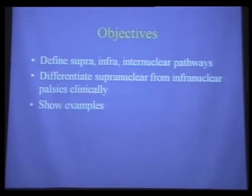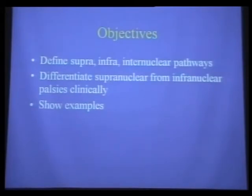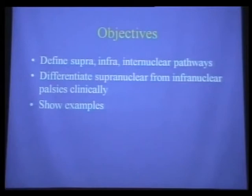That's what my residents do—when they come out of training, they always want to jump straight to sixth nerve palsy, third nerve palsy, et cetera. If you think about whether it could be supranuclear, infranuclear, or intranuclear on every diplopia patient, it will reinforce the anatomic pathways we're going to cover, and then you can go back and make a diagnosis of the nerve. There are ways, clinically, to differentiate supranuclear from infranuclear palsies.